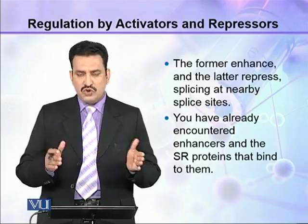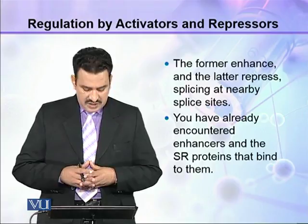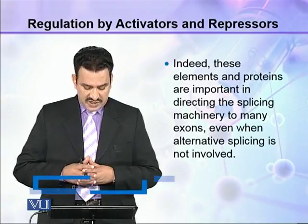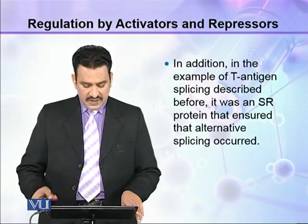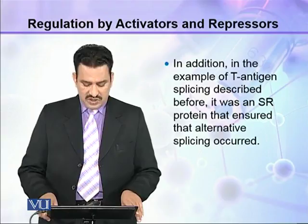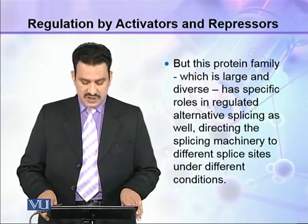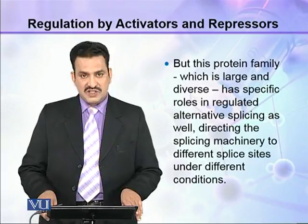Nearby splice sites will either enhance or repress. You have already encountered enhancers and the SR proteins that bind to them. These elements and proteins are important in directing the splicing machinery to many exons even when alternative splicing is not involved. In the example of T antigen splicing described earlier, it was an SR protein that ensured alternative splicing takes place. But this protein family, which is large and diverse, has specific roles in regulating alternative splicing as well, directing the splicing machinery to different splice sites under different conditions.